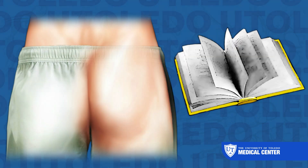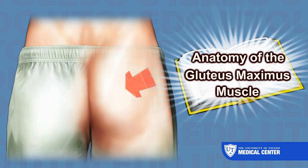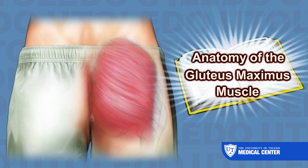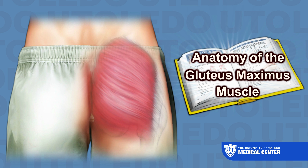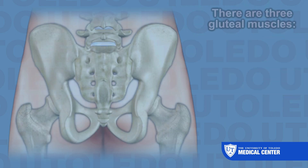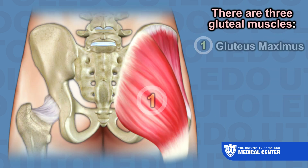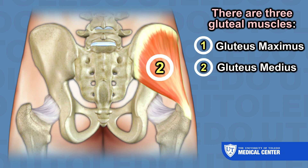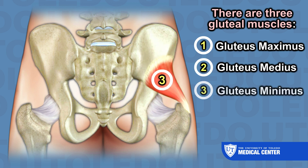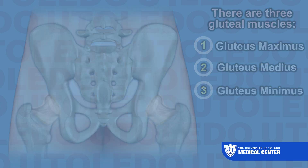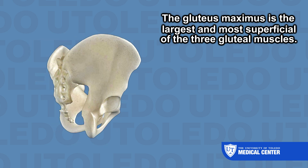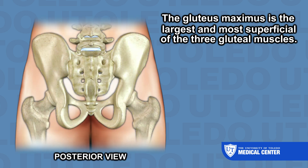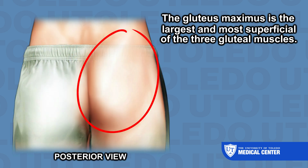In this video, we are going to discuss the anatomy associated with the gluteus maximus muscle of the gluteal region or buttock region. There are three gluteal muscles: the gluteus maximus, the gluteus medius, and the gluteus minimus. The gluteus maximus is the largest and most superficial of the three gluteal muscles.